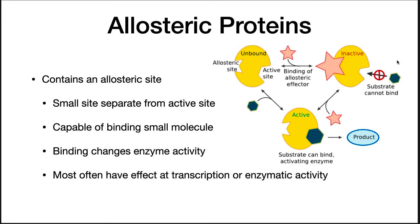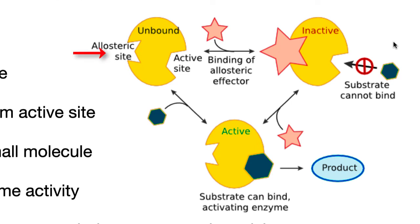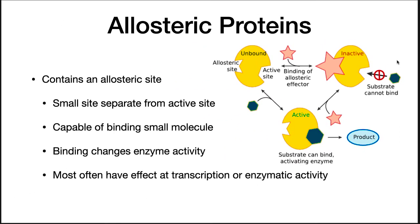This change in the environment is sensed by the cell as the presence or absence of a small molecule. Allosteric proteins will detect these signal molecules. An allosteric protein contains a second site different from its active site that, when bound, changes the enzyme's activity. When the allosteric protein binds its allosteric effector, it is then inactive. Binding to the allosteric site causes a conformational change in the protein. Allosteric proteins are most often associated with transcription or enzyme activity.